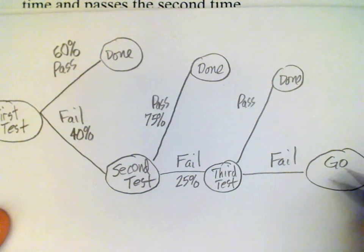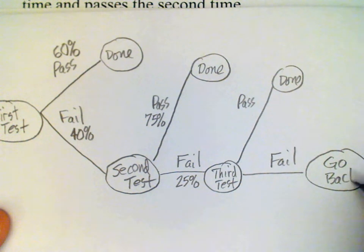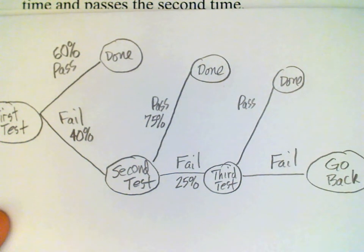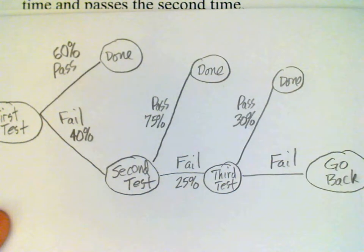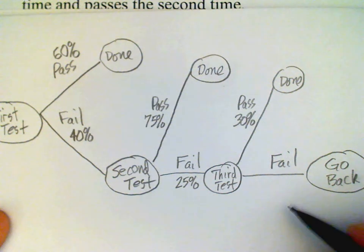And again, we can fill in the number here: 30% pass. And those who fail the third test, 70%.